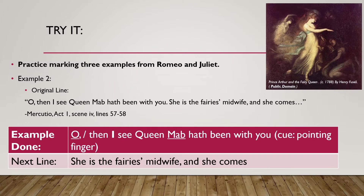Let's try example two. It comes from act one, scene four. Mercutio is talking to Romeo about his personal views about love: 'Oh, then I see Queen Mab hath been with you. She is the fairy's midwife and she comes.' When I read it this way, it's easy to miss the meaning.